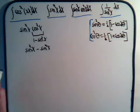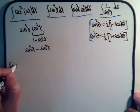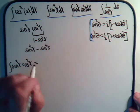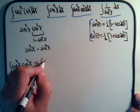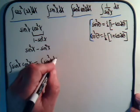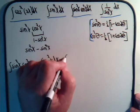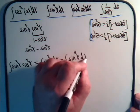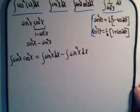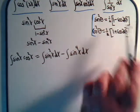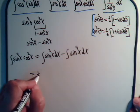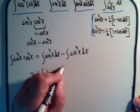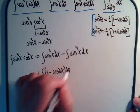And we know how to solve that too, because we did it in the last video. So the integral of sine squared x times cosine squared x is equal to the integral of sine squared x dx, minus the integral of sine to the fourth x dx. For this one we'll use our formula, so this will be equal to one-half the integral of one minus the cosine of 2x dx.